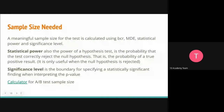Sample size is calculated using four things: baseline conversion rate, MDE, statistical power, and significance level. Statistical power is the probability that a test correctly rejects the null hypothesis — it's the probability of a true positive result. Statistical power is only relevant when the null hypothesis is false. The significance level is the boundary for statistical significance. When interpreting the p-value, the p-value is the probability that the difference between two values occurred by random chance — it is evidence against the null hypothesis.